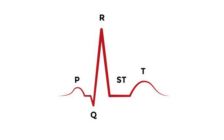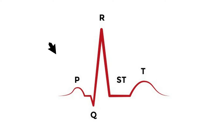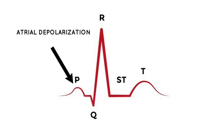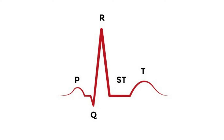First is the P wave. The first little hump, or bump, you see is known as the P wave. The SA node is responsible for this. The P wave represents atrial depolarization.